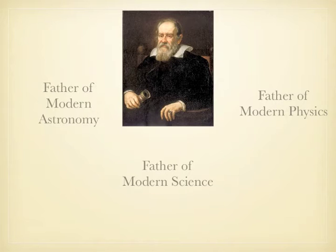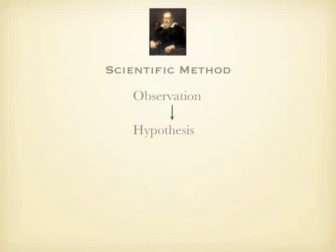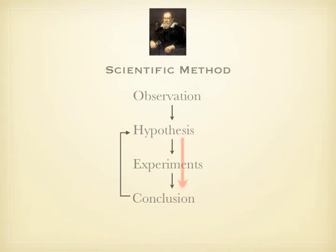The steps involved are: first, you make an observation of some physical phenomena. Then you ask the question, why? You try to come up with a possible reason or explanation for your observation — this reason is called the hypothesis. The next step is to test your hypothesis by performing experiments. If the conclusion from the experiments proves the hypothesis, then you have proven the theory. If it doesn't, you must come up with a new hypothesis and a new experiment, repeating these steps until you have a new theory.